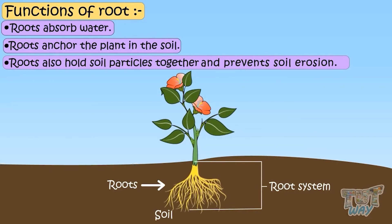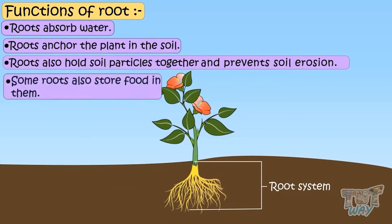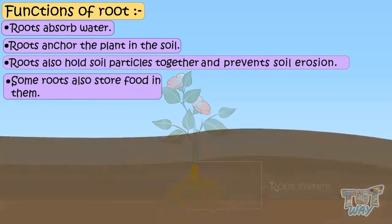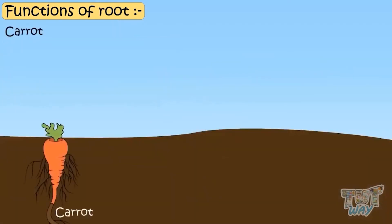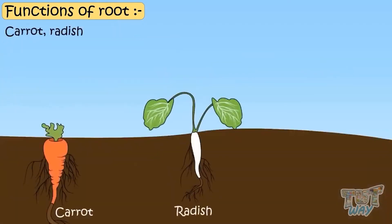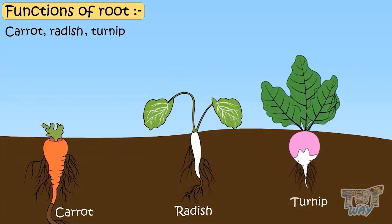Some roots also store food in them. Carrots, radish, and turnips are tap roots that we eat.